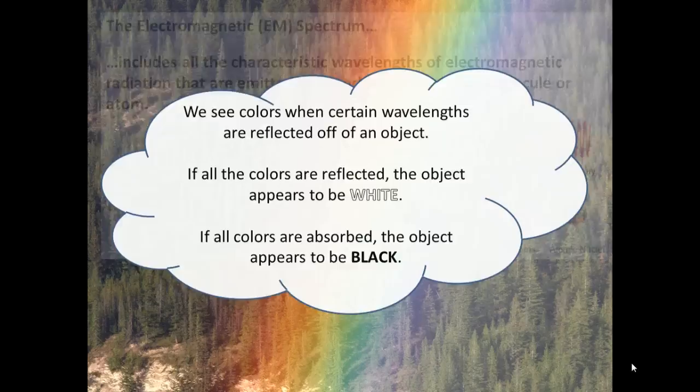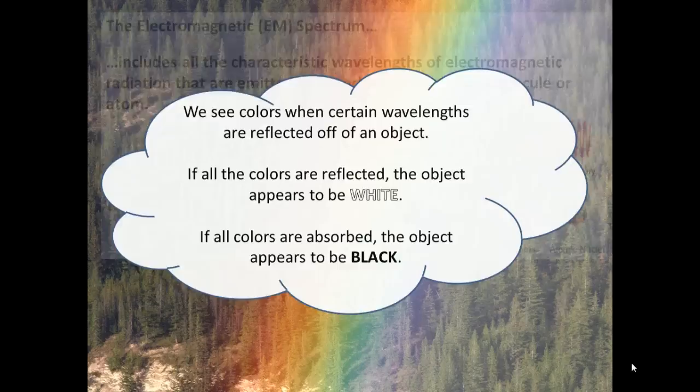The electromagnetic or EM spectrum includes all the characteristic wavelengths of electromagnetic radiation or a portion thereof that are emitted or absorbed by an object, molecule, or atom. You have probably heard of most of these types of electromagnetic radiation.